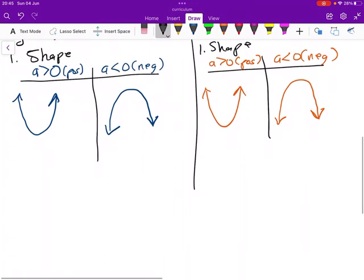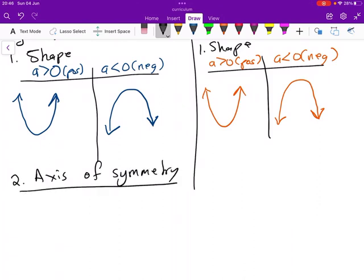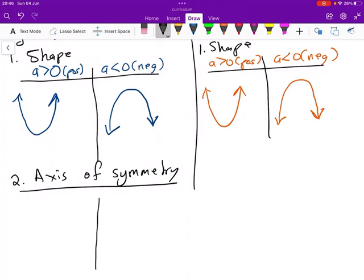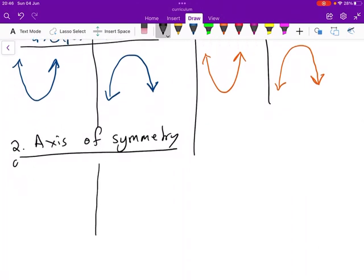The second thing that we want to determine, we want to find out what is the axis of symmetry. What is the axis of symmetry? And there are two ways that we can do it. We can do it using the grade 10 and 11 method, where you have x equals to minus b all over 2a.